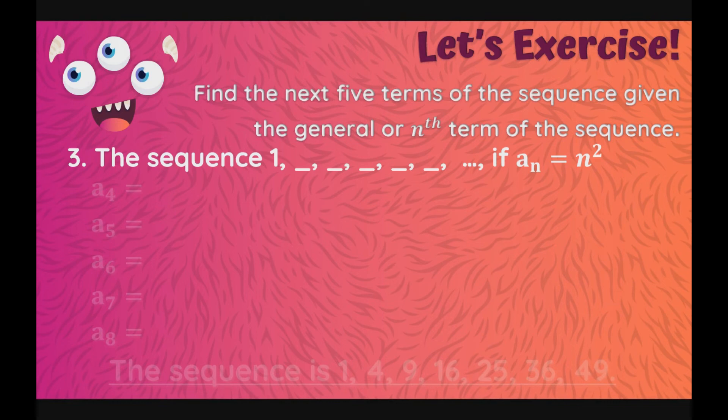Next, how about this one? First term lang yung given, at ang ating hahanapin is yung a sub 2 hanggang a sub 6. At ang ating general term ay a sub n is equal to n squared. Para mahanapin, ang ating a sub 2, this should be a sub 2, it will be equal to n, ang ating n for this one is 2 raised to 2, which is equal to 2 raised to 2. Sorry, 2 times 2, which is 4.